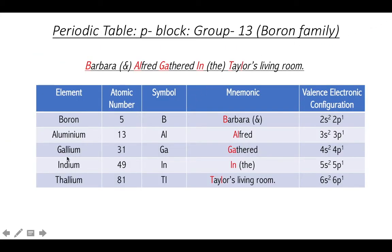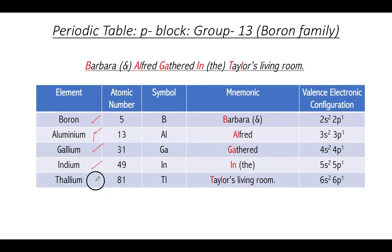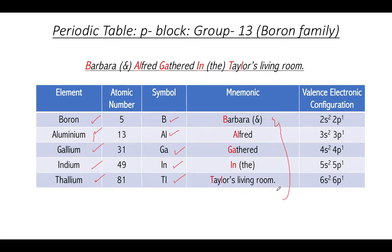The first group we discuss today is Group 13, also referred to as the boron family, having five elements: boron, aluminium, gallium, indium, and thallium, with their respective atomic numbers. I am not expecting you to remember the atomic numbers — I will tell you how you can arrive at them when we discuss the inert gas elements. Their symbolic representations are: boron as B, aluminium as Al, gallium as Ga, indium as In, and thallium as Tl.